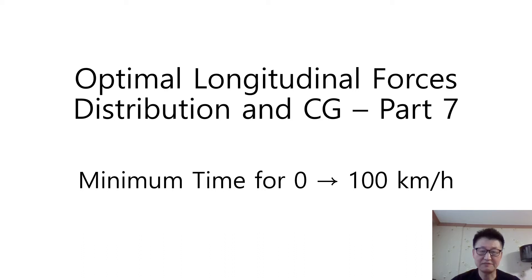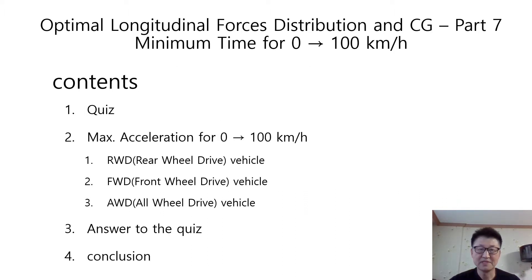Hi guys, this video is about Optimal Longitudinal Forces Distribution and CGA, Part 7. The main title is the minimum time for 0 to 100 km per hour. In this video, I will explain how to simply calculate the required minimum time for 0 to 100 km per hour if the engine power is big enough to accelerate the vehicle weight.